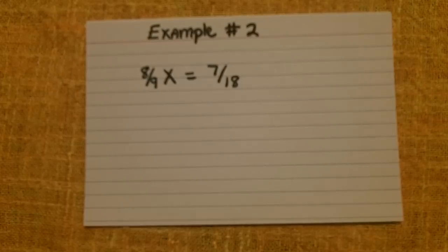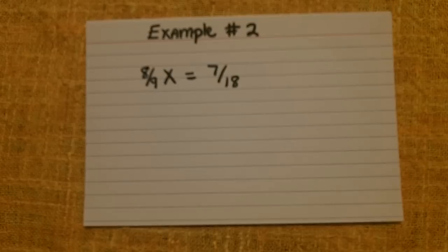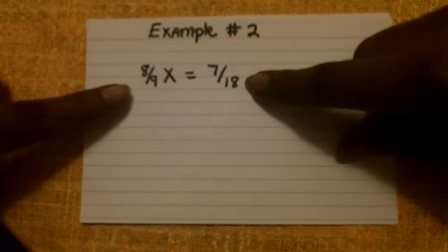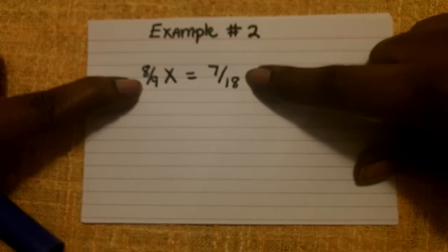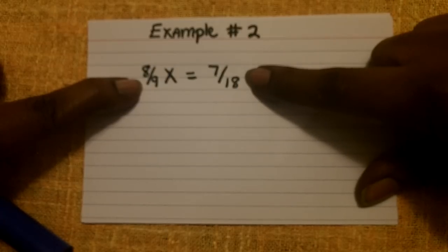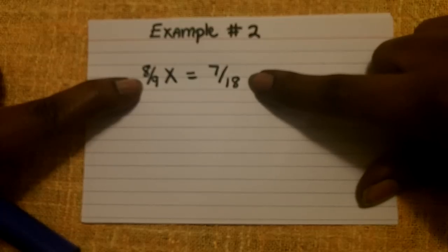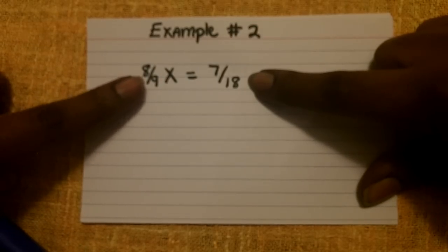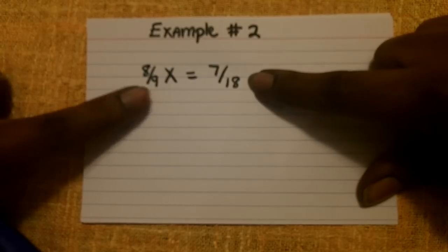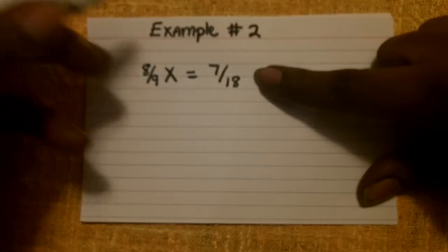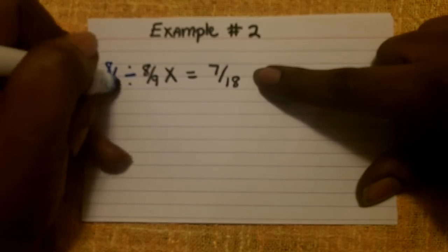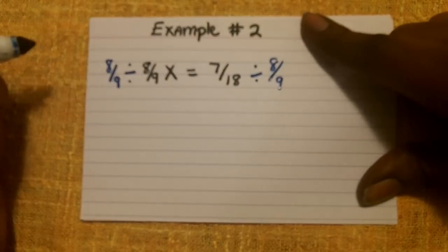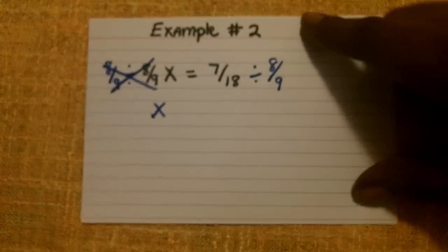Let's look at another example. Sometimes they'll give you equations with a fraction. You're still going to follow the three steps, but you also need to remember your rules for computation of fractions. Step one is to simplify each expression — both sides have already been simplified. Step two: we do not have addition or subtraction, so we will skip it. The last step is to multiply or divide. In this equation, we have multiplication: eight-ninths times X. The inverse of multiplication is division, so I'm going to divide both sides by eight-ninths. Those two cancel out, leaving me with X.